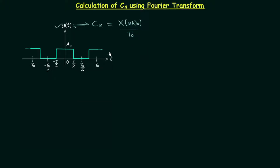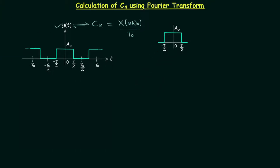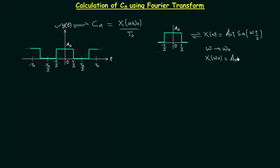We take the rectangular pulse train as the periodic signal yt, choosing the center rectangular pulse. This is a rectangular function and we have already calculated its Fourier transform. Its Fourier transform X(ω) is equal to A0·τ·sinc(ω·τ/2). Now let's say ω is equal to the fundamental frequency ω0, so we will have X(ω0) equal to A0·τ·sinc(ω0·τ/2).